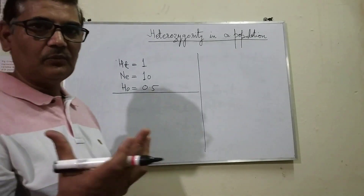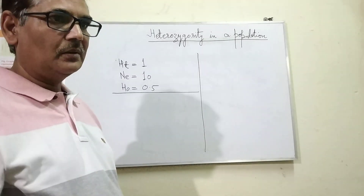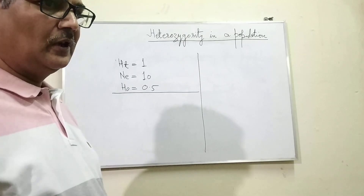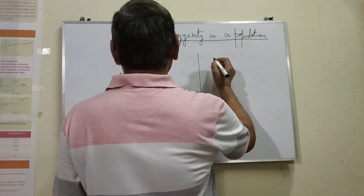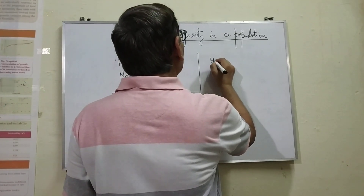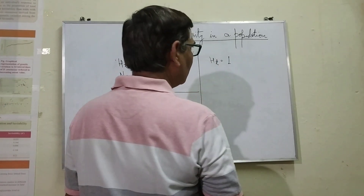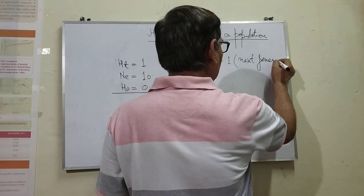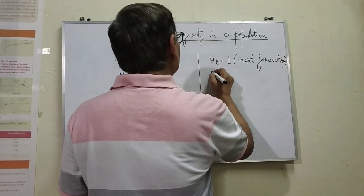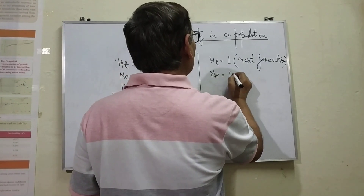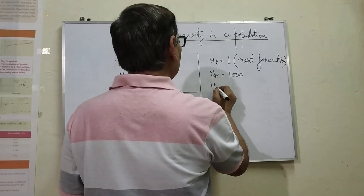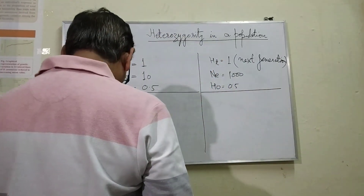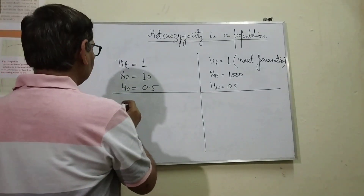That is, only 10 individuals are present in a population — definitely a very small population. It will influence heterozygotes because in a small number of individuals, the chances of inbreeding will be high. We can consider another situation where heterozygotes will be measured in the next generation — the first generation. And we will see that if Ne is equal to 1000 and the initial heterozygosity Ho is equal to 0.5.